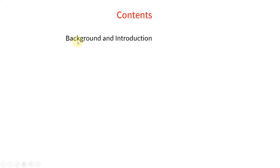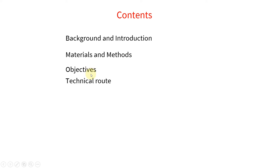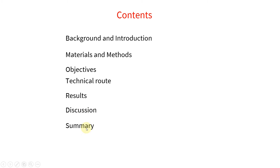The first slide of any presentation should show the content outline. The content should begin with background and introduction, followed by material and methods, then objectives and technical routes. Later I will tell you when objectives and technical routes are not needed. After that should come results, then discussion, then summary, and finally acknowledgements and collaborations.